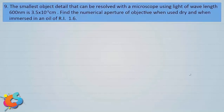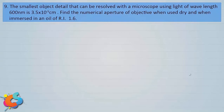Let's take up a question on microscope. The smallest object detail that can be resolved with a microscope using light of wavelength 600 nanometer is 3.5 × 10⁻⁵ centimeter. Find the numerical aperture of the objective when used dry and when immersed in an oil of refractive index 1.6.